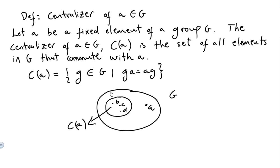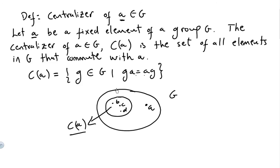Now I want to introduce another concept: the centralizer of a in G. Let a be a fixed element of a group G. The centralizer of a in G is the set of all elements in G that commute with a. So the centralizer of a is the set of g in G such that g·a equals a·g.